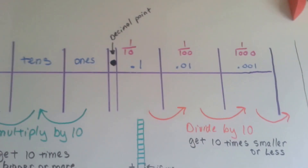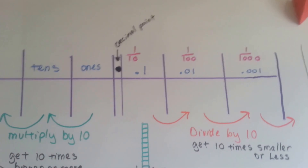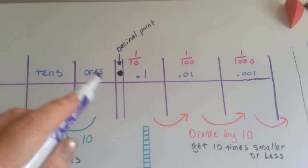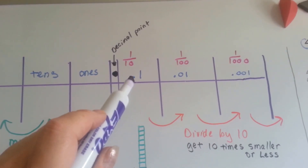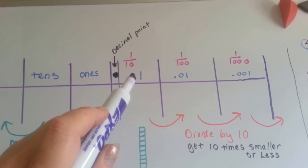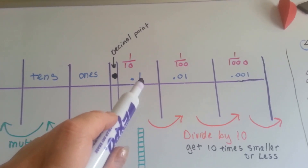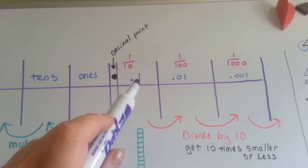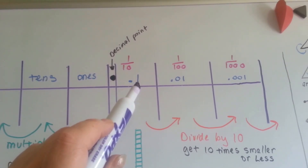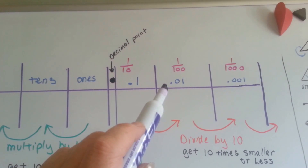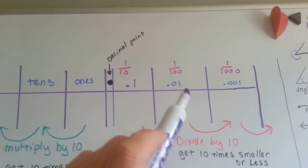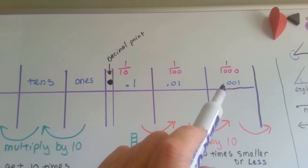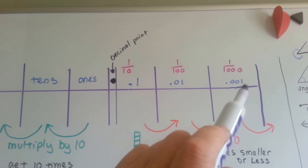If we look at a place value chart, here are our tens and our ones and our decimal point. One tenth would be written as point one — a decimal point and then the one. One hundredth would be point zero one, and thousandths would be point zero zero one.